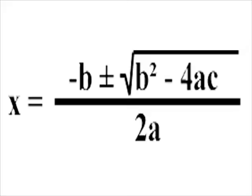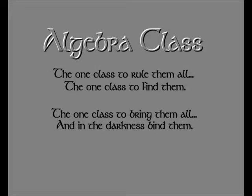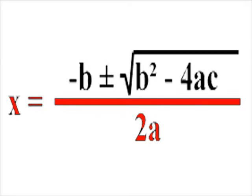Learn the quadratic formula or you might accidentally fail your algebra class. Negative b plus or minus b squared minus 4ac, all under a radical sign, except negative b. Then you divide all of that by 2a — it is precisely what x is equal to anyway.